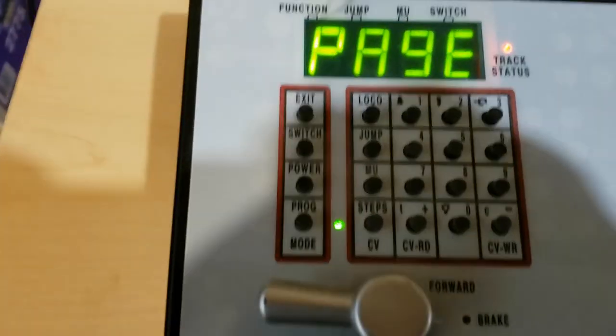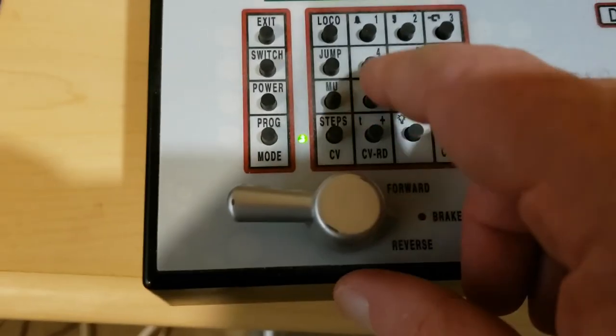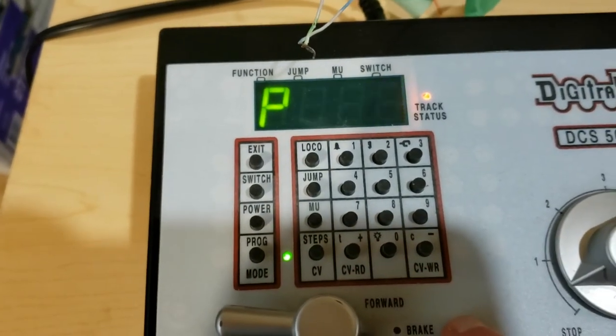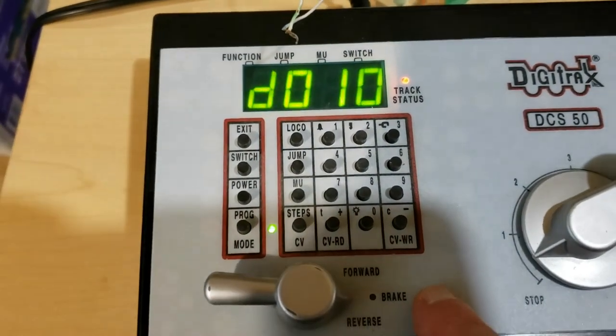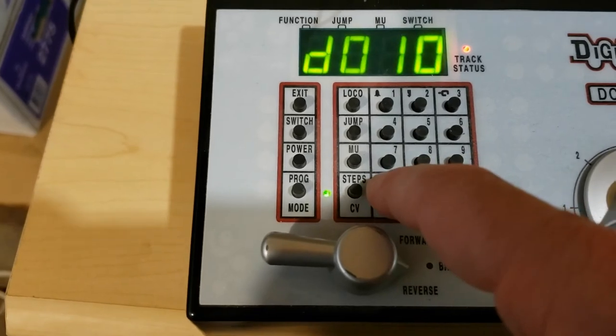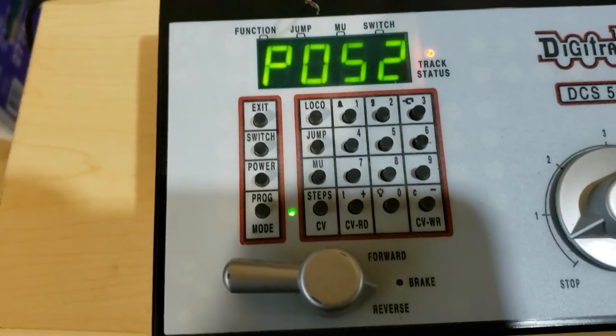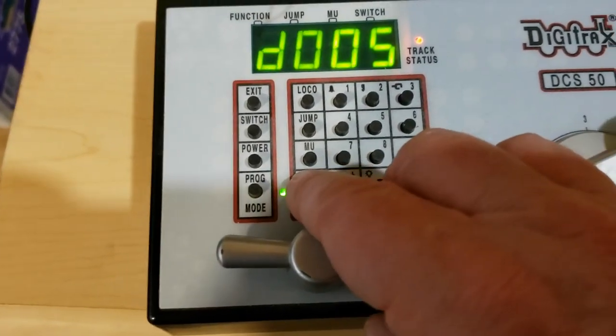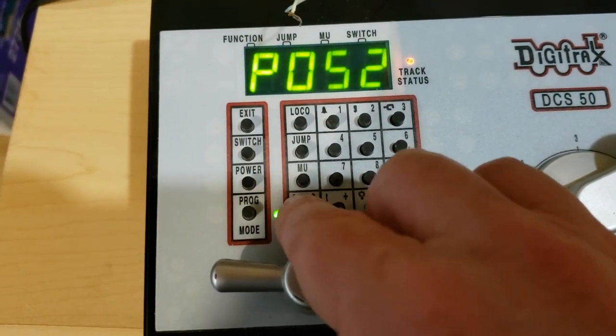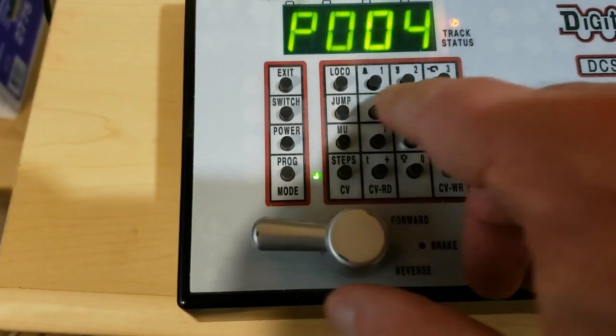So I start by, once again, going in CV49 and 10, which is, again, the diesel engine sound. So CV52, read, and volume is 5. In this case, I'm not going to bother setting it. So I'm just going to go on and back to CV49.